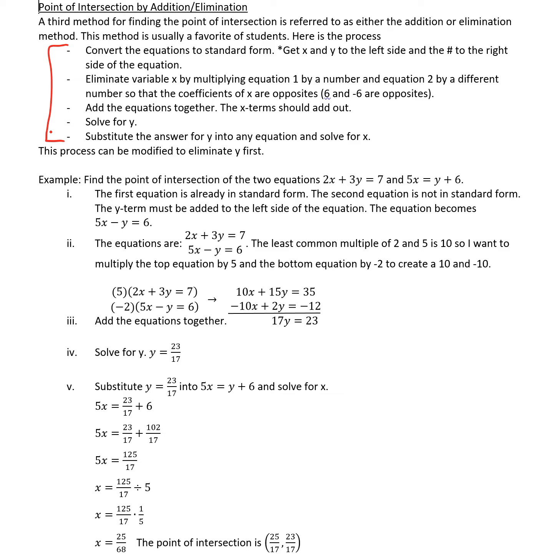The example that I'll work through says find the point of intersection of the two equations 2x plus 3y equals 7 and 5x equals y plus 6. The very first equation is already in standard form. The x term is first, then there's a y term, an equal sign, and the constant of 7. The second equation is not in standard form. We can see that the y term is on the right hand side and it needs to be moved over to the left. We'll do that by subtracting the y. So the second equation becomes 5x minus y equals 6.